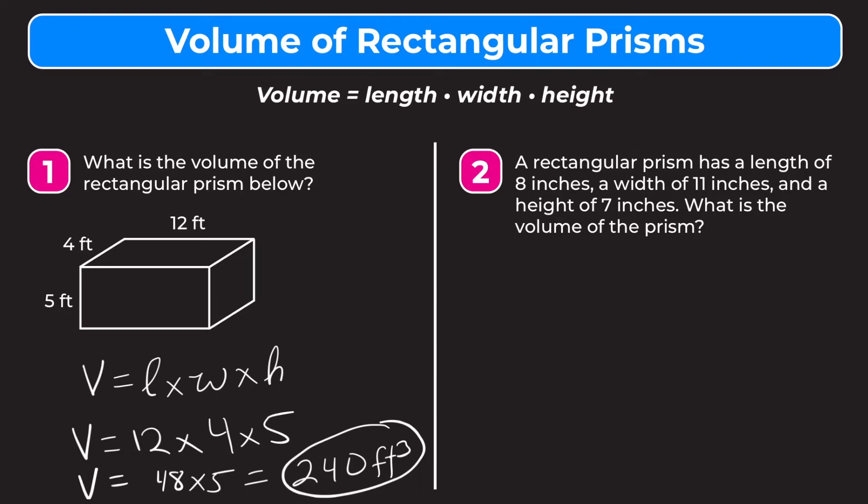Now let's try number two. So for number two, we don't have a rectangular prism drawn out. You can draw it out if it helps you, but if you realize they give you the numbers for length and width and height written out.